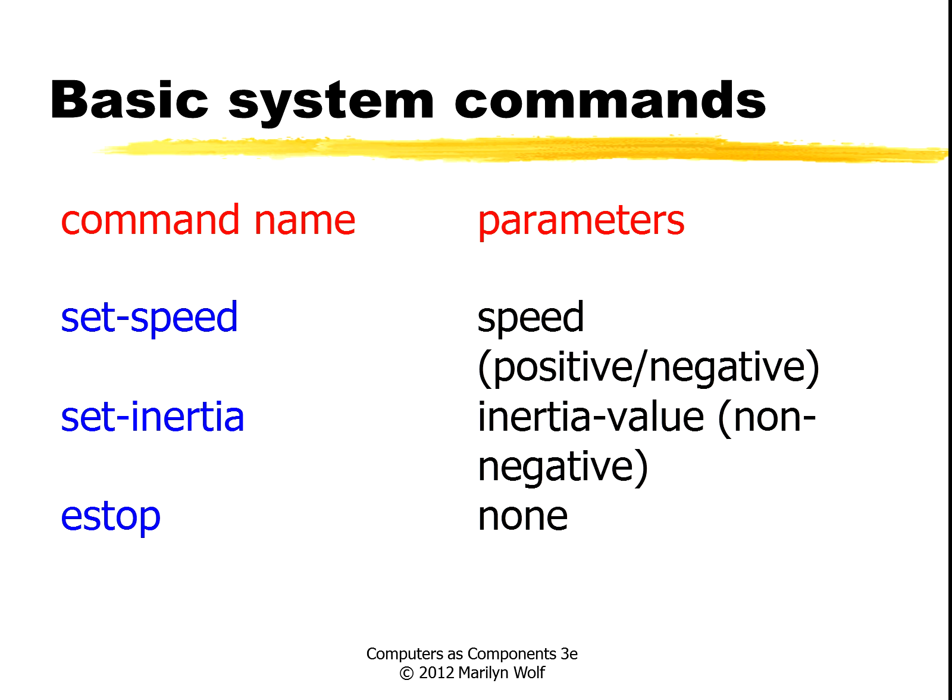Let's look at the system commands. We have a set speed command whose parameter is a speed which can be positive or negative — go forward or back. Set inertia which is non-negative, and emergency stop which does not need a parameter.